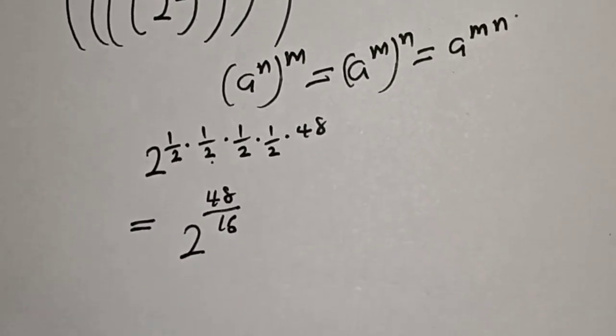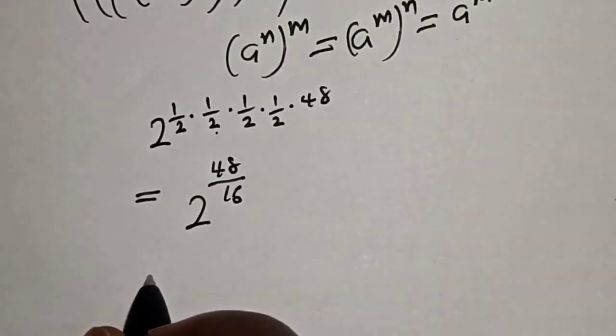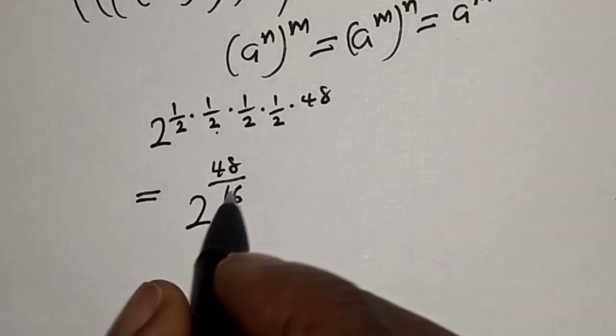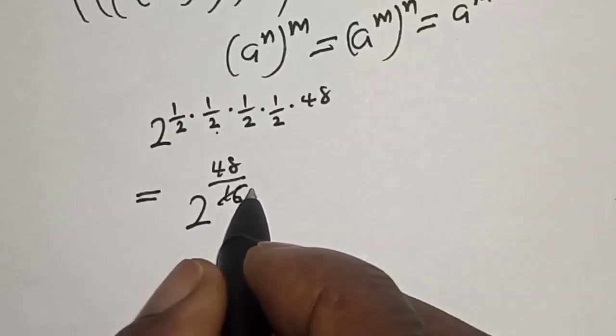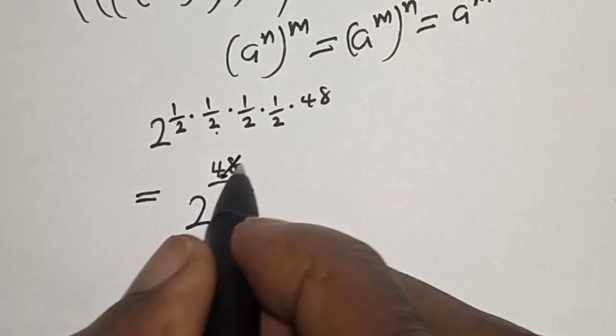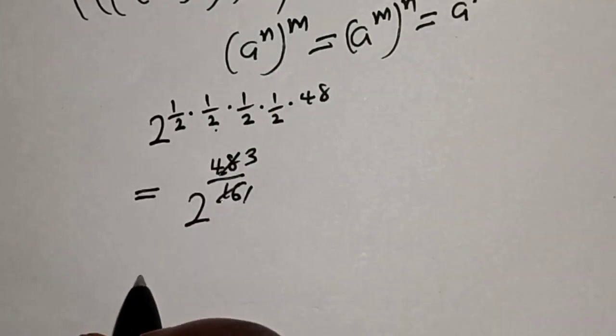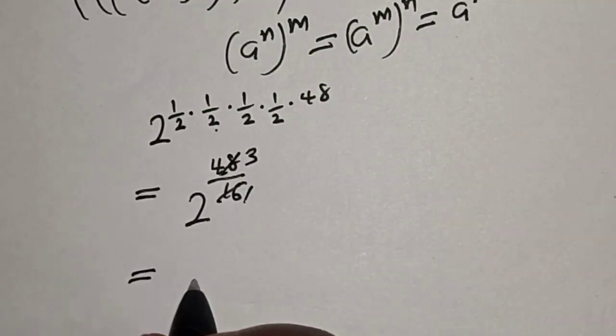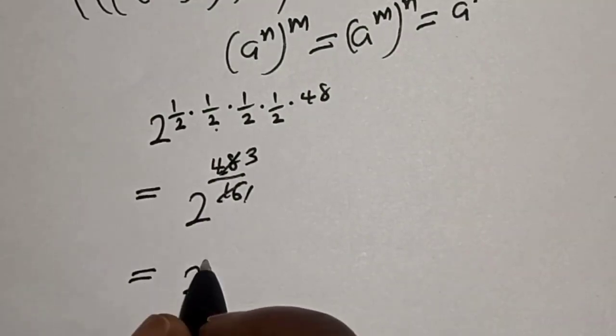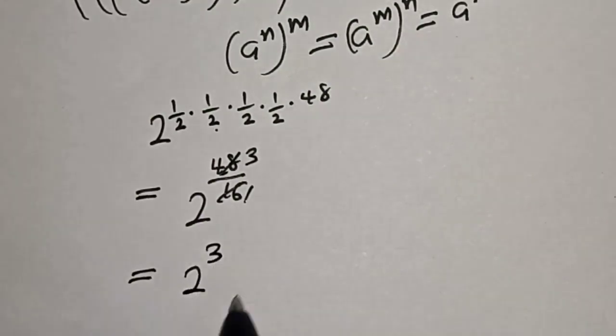Now let's divide. We have 48 over 16. 16 goes into 48 three times, giving us 3. So this is equal to 2 raised to the power 3.